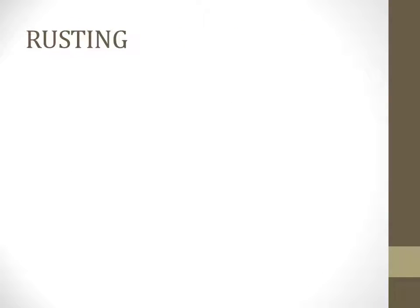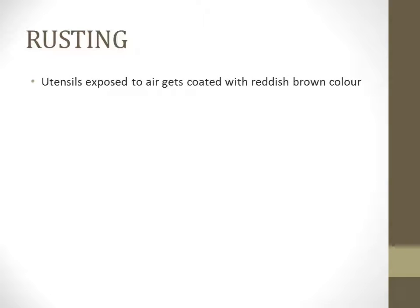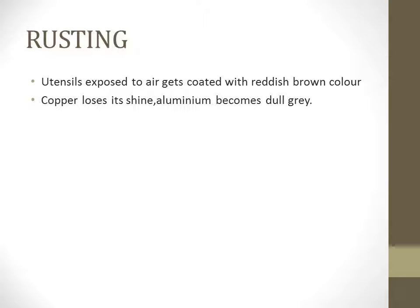Now, what is rusting? When utensils, aluminum, or copper are exposed to moist air, they get coated with a reddish-brown color. This is nothing but rusting. It is an oxidation process and it takes place very slowly. Copper loses its shine and aluminum becomes dull gray. These are examples of rusting.